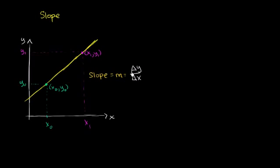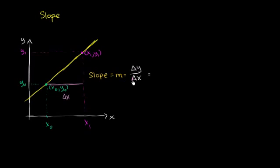Just as a reminder, this triangle is the Greek letter delta — it's shorthand for 'change in whatever.' So change in y over change in x. Let's think about what this is going to be for this example. We are moving from x naught to x₁, so this is our change in x — starting at x naught and going to x₁. That is our change in x.